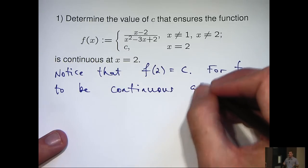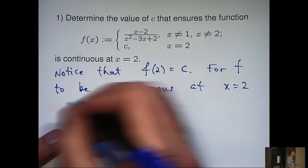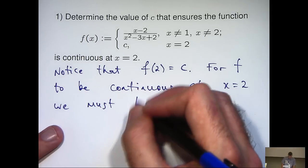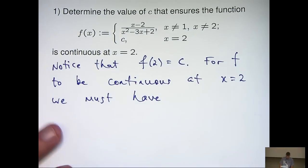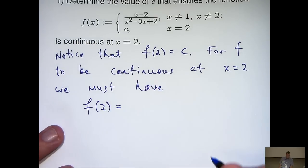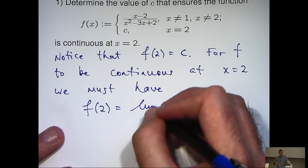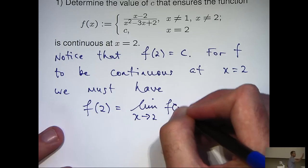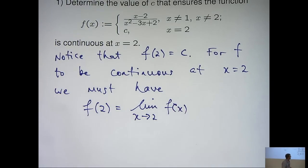For f to be continuous at, say, the point x equals 2, we must have the following holding. The value of the function at x equals 2 must equal the limit of the function as x approaches 2. So that's very important.